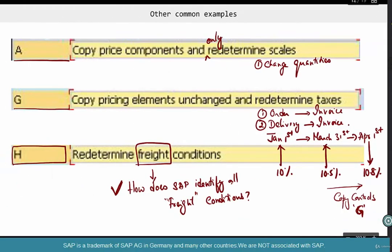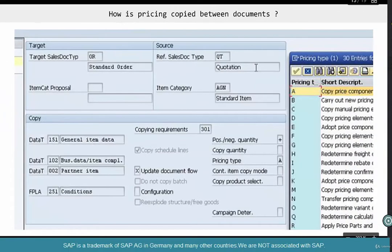Now, before we go there, I want to give you a brief overview about where pricing type is there in copy controls. Now, quotation to OR. When you create an order with reference to a quotation, a pricing type of A is used. What does A do?